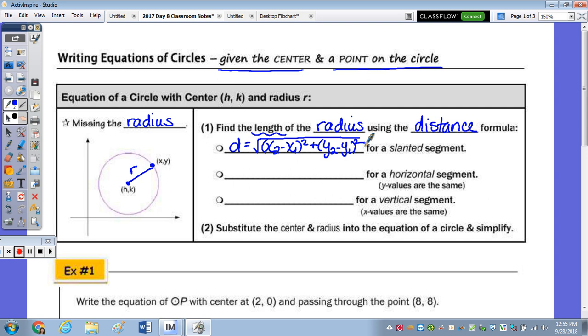Remember, in a horizontal segment, you just have the run going left to right. So your x values are changing, but your y values are not. So the distance of a horizontal segment is the absolute value of your x coordinates. And then for a vertical segment, moving top to bottom, if your x values are the same, to calculate the length we take the absolute value of y2 minus y1. And then we simply substitute the center and radius into the equation and simplify.